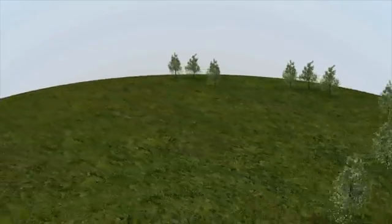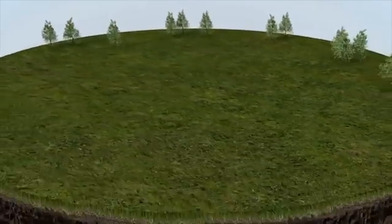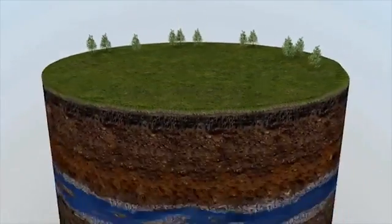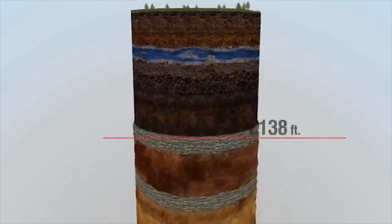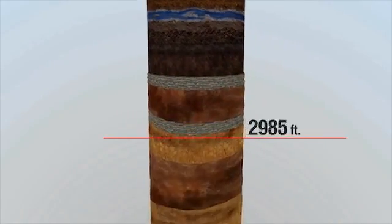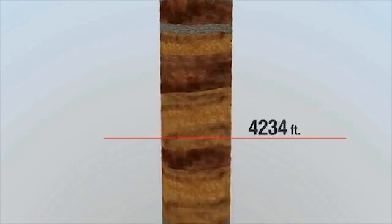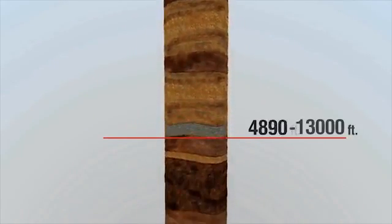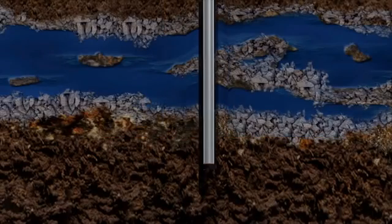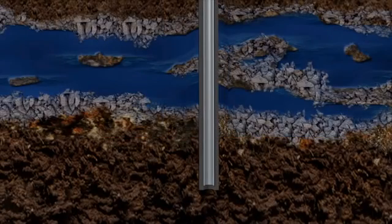Shale reservoirs are usually one mile or more below the surface, well below any underground source of drinking water, which is typically no more than 300 to 1,000 feet below the surface. Additionally, steel pipes called casing, cemented in place, provide a multi-layered barrier to protect freshwater aquifers.